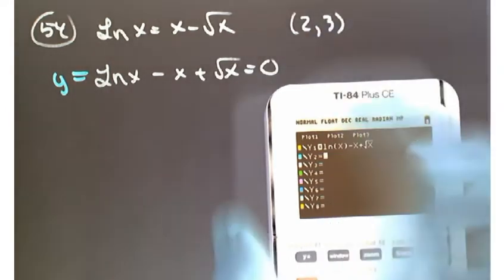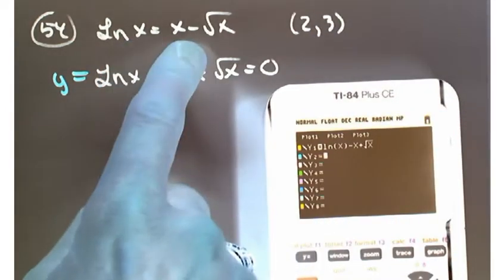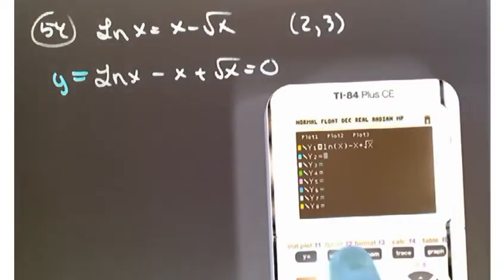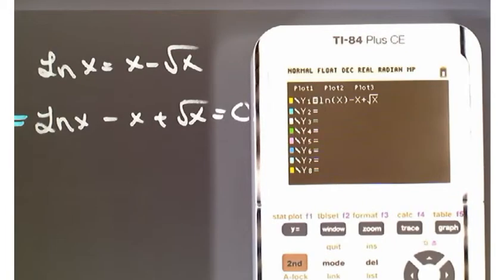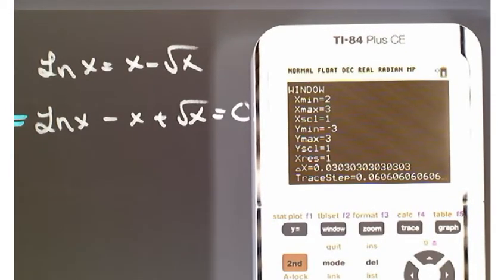Now the problem asks us to look for a place where this is true on the interval two to three. So let me set up my calculator, its window, at least on the x-axis, between two and three. So window, two, and three.